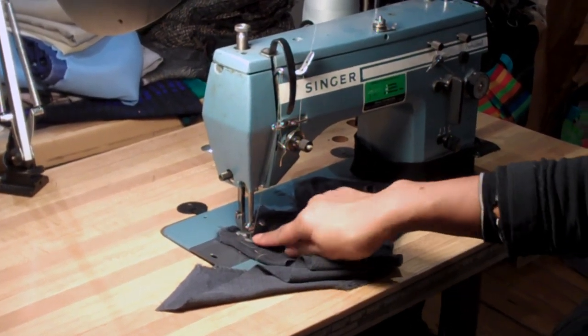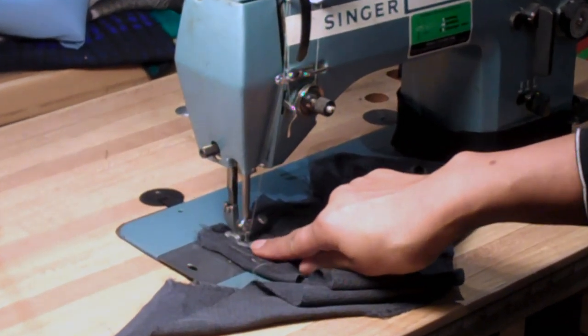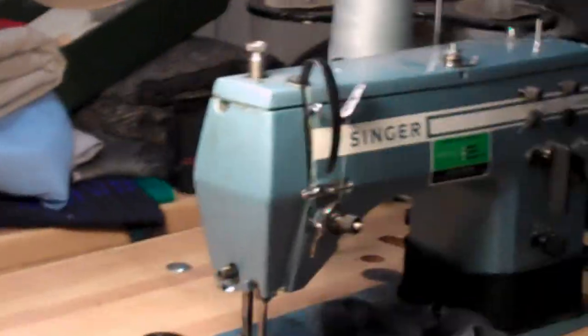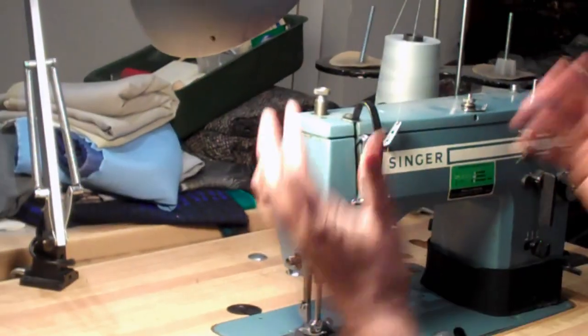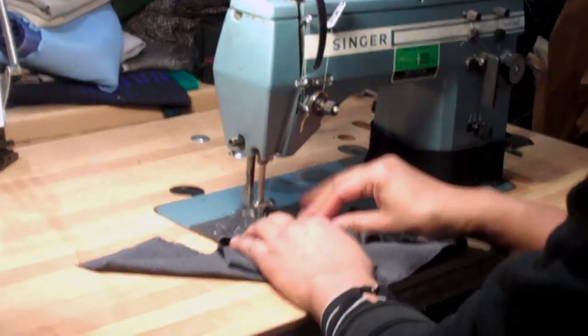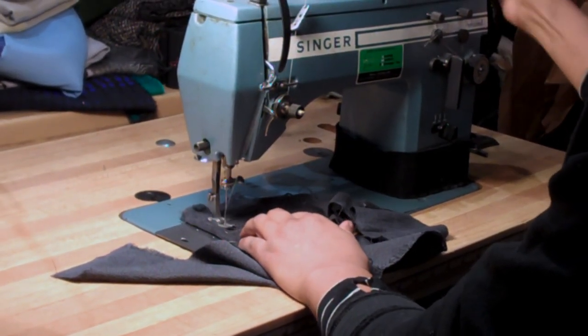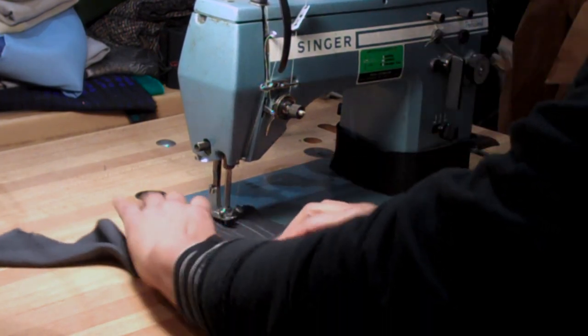The way I'm raising this here is called the presser foot. And I'm raising that with my knee. This is a knee control. Now you can also control this back here, this lever back here. But when you're sewing, you want to have both hands. And so that's why they have the knee thing.